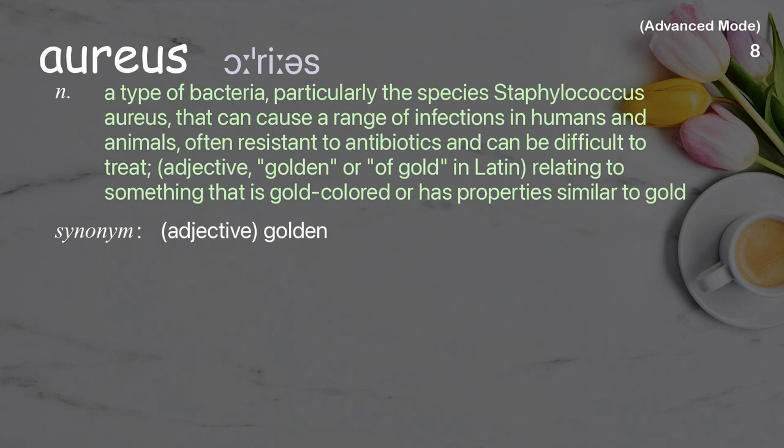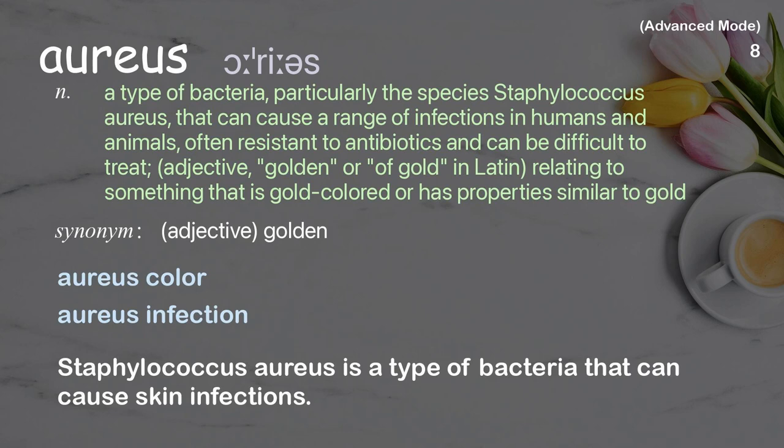Aureus: a type of bacteria, particularly the species Staphylococcus aureus, that can cause a range of infections in humans and animals, often resistant to antibiotics and can be difficult to treat. As an adjective, it means golden or of golden color in Latin. Examples: aureus color. Aureus infection. Staphylococcus aureus is a type of bacteria that can cause skin infections.